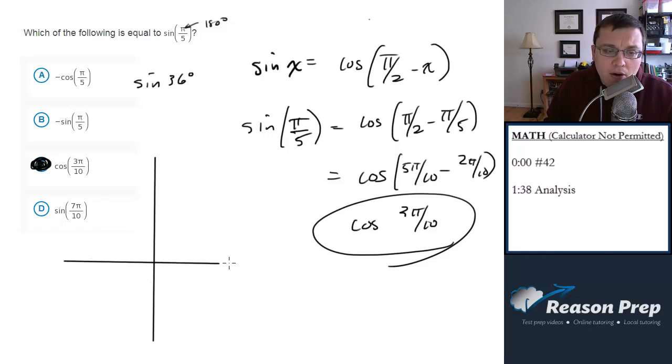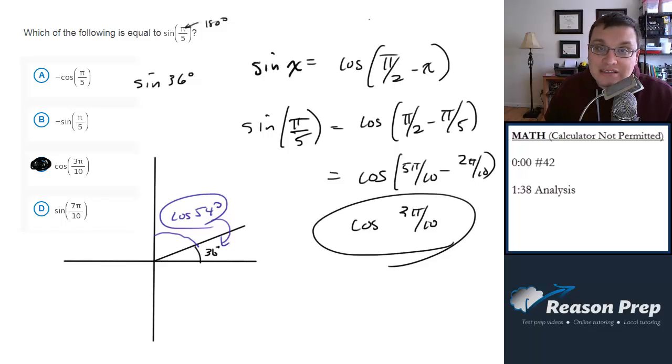If you remember how trig functions work within quadrants, sine of 36 degrees is the same as the cosine of whatever is left. So sine of 36 equals cosine of 54 degrees.